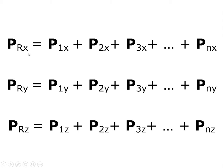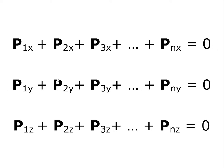The x component of the resultant is just the sum of all the x components of all the various forces that might exist on the object. If there are n forces, we take the x component of the first force, the x component of the second force, and so forth. Likewise, the y component of the resultant force is the sum of the y components of all forces from the first through the nth. We write a similar equation for z. So the sum of all x components has to be zero, the sum of all y components has to be zero, and so forth.